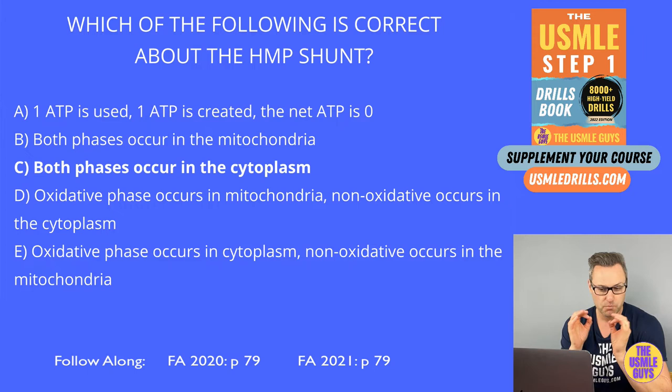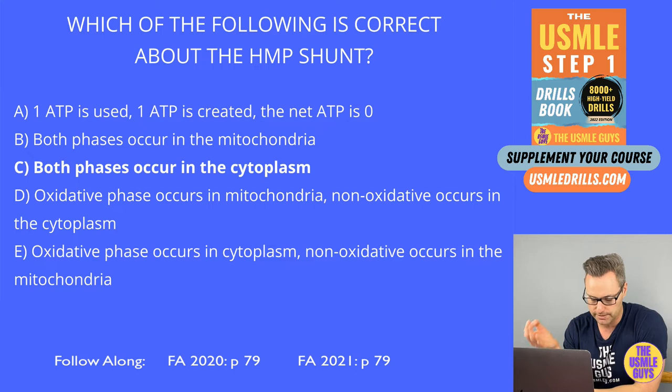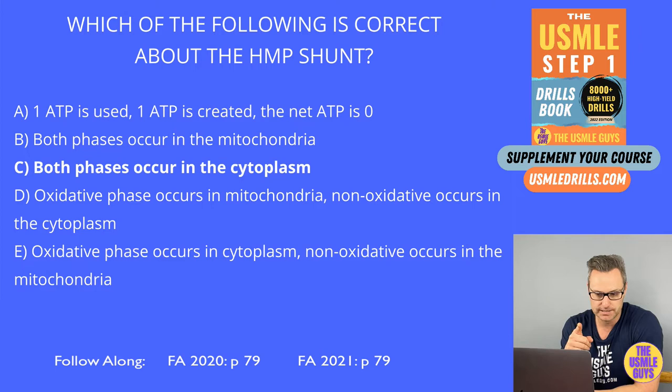There's a really important enzyme in the HMP shunt that's always tested due to its associated genetic condition: glucose-6-phosphate dehydrogenase deficiency. This is inherited X-linked recessive. When we're deficient in this enzyme, we can't make NADPH.